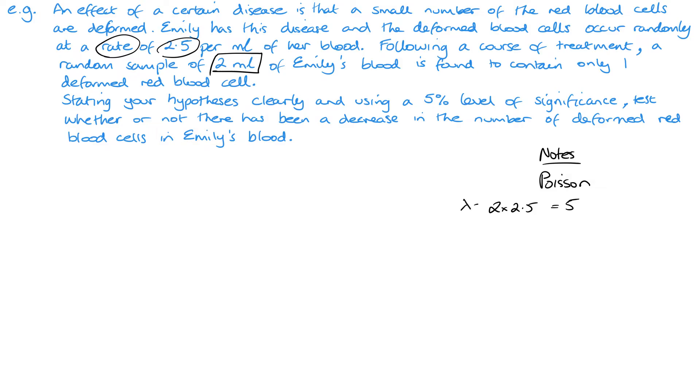So you can see the word rate there, that's going to mean it's Poisson. Obviously in an exam it could be binomial. And then we've got 2.5 per milliliter of her blood, and we have a random sample of two milliliters. So two times the 2.5 will give me five, so that is my value of lambda.